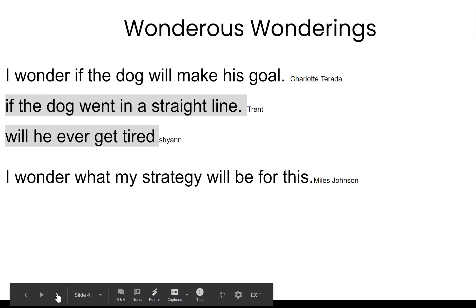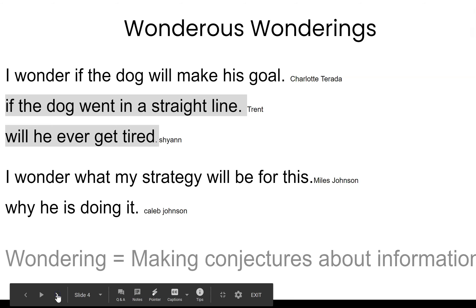I wonder what my strategy will be for this. That's from Miles. And I didn't know if he was talking about the dog strategy again, or if he was going to try to figure out how he would do it. Why is he doing it? Another central question. I think it's just because of what he does. When we wonder, we make conjectures. We have ideas. Talking about a straight line or whether he'll get tired. That changes the way we look at problems.